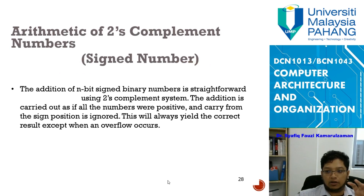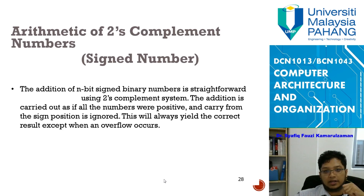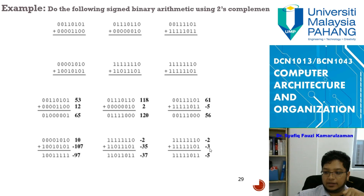For two's complement arithmetic with signed numbers: addition of n-bit signed binary numbers is straightforward. Addition is carried out as if all numbers were positive, and carry from the sign position is ignored — this always yields the correct result except when overflow occurs. Examples: 53 plus 12 is 65, 118 plus 2 is 120, 61 minus 5 is 56, 10 minus 107 is negative 97, negative 2 minus 35 is negative 37, and negative 2 minus negative 3 equals negative 5. Some results produce an overflow bit that is ignored.